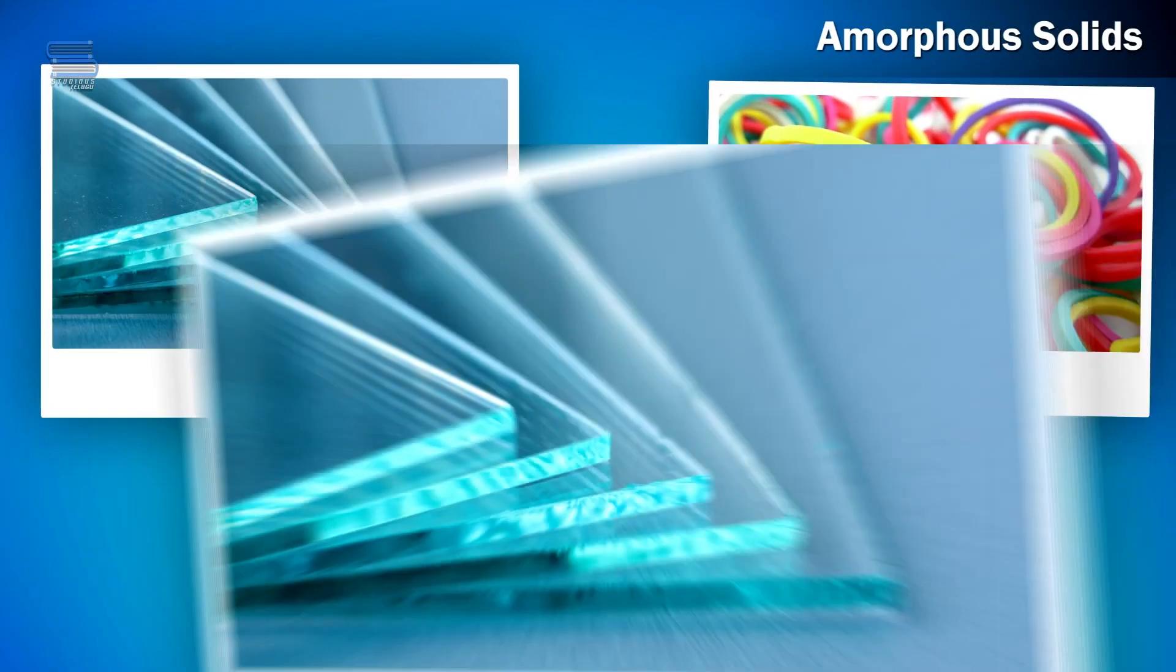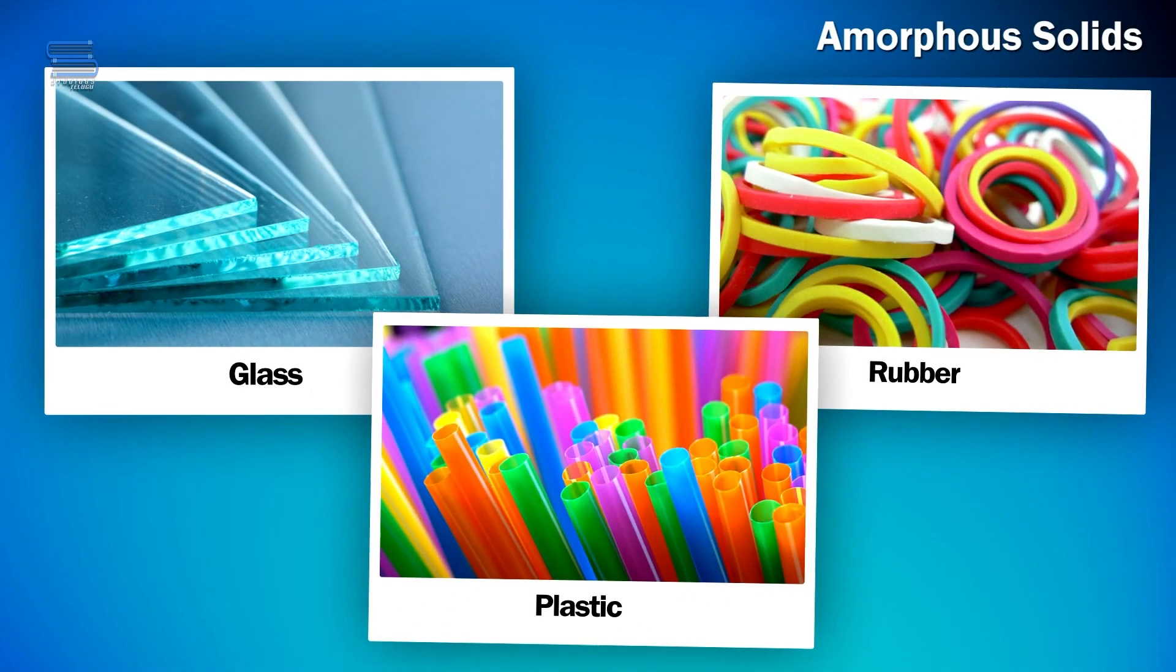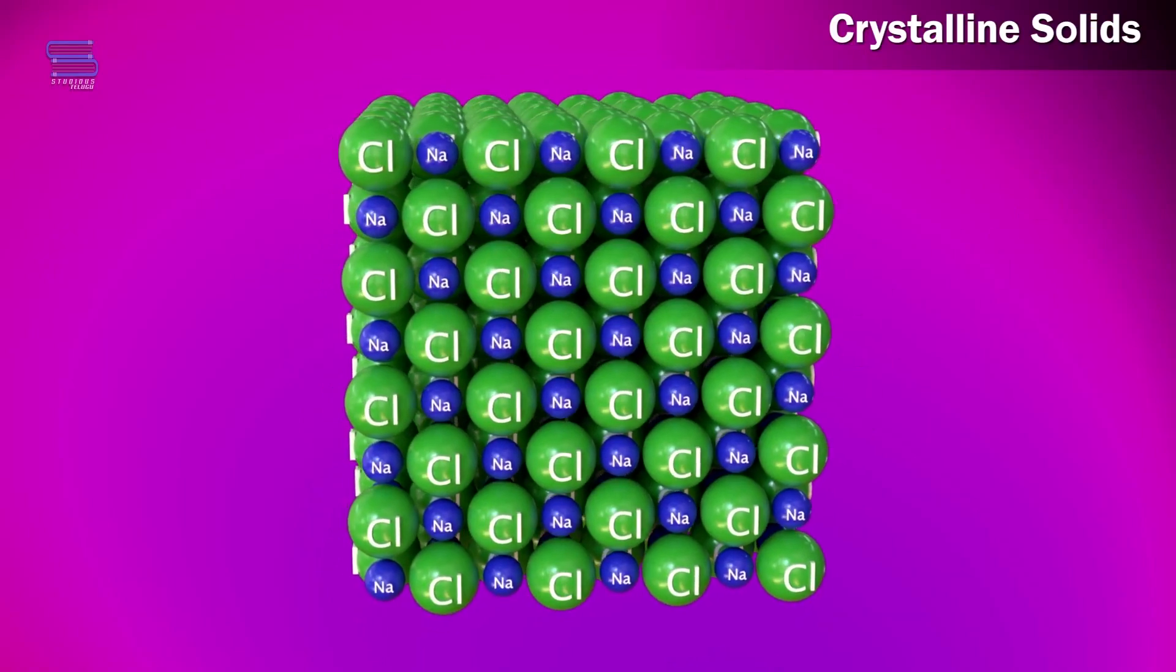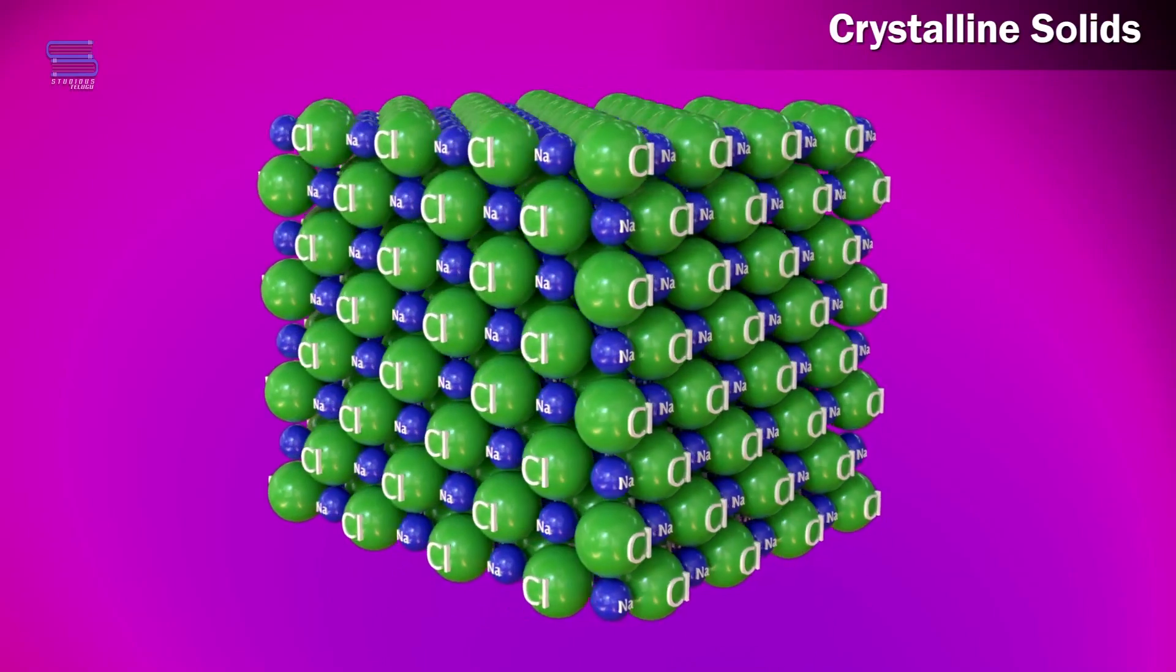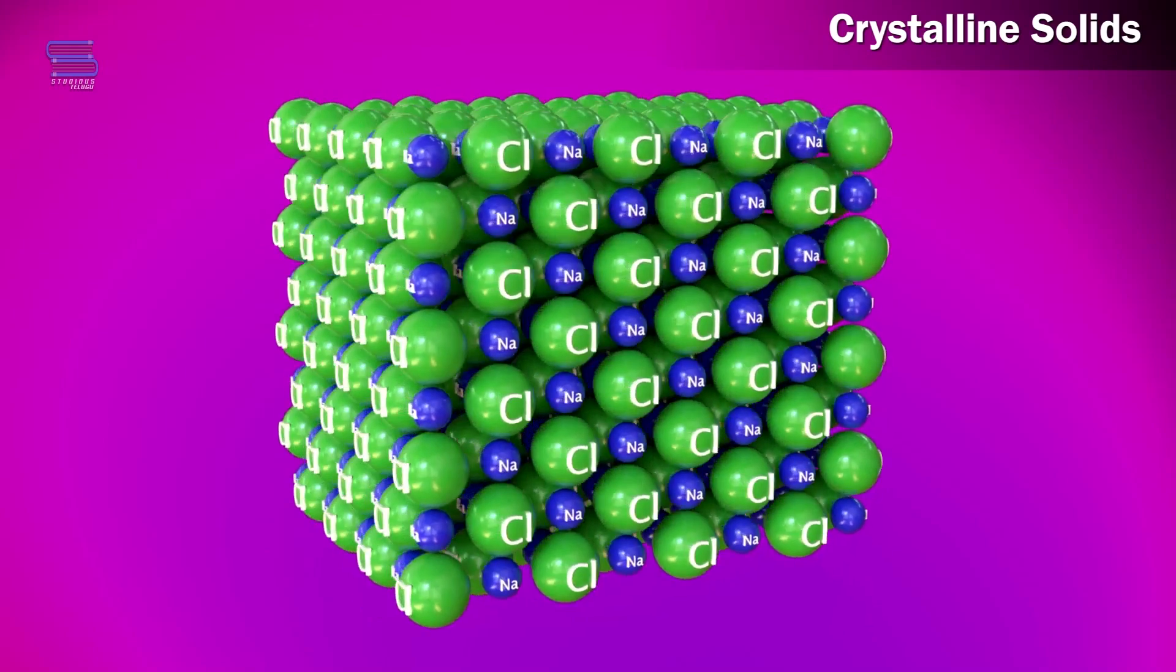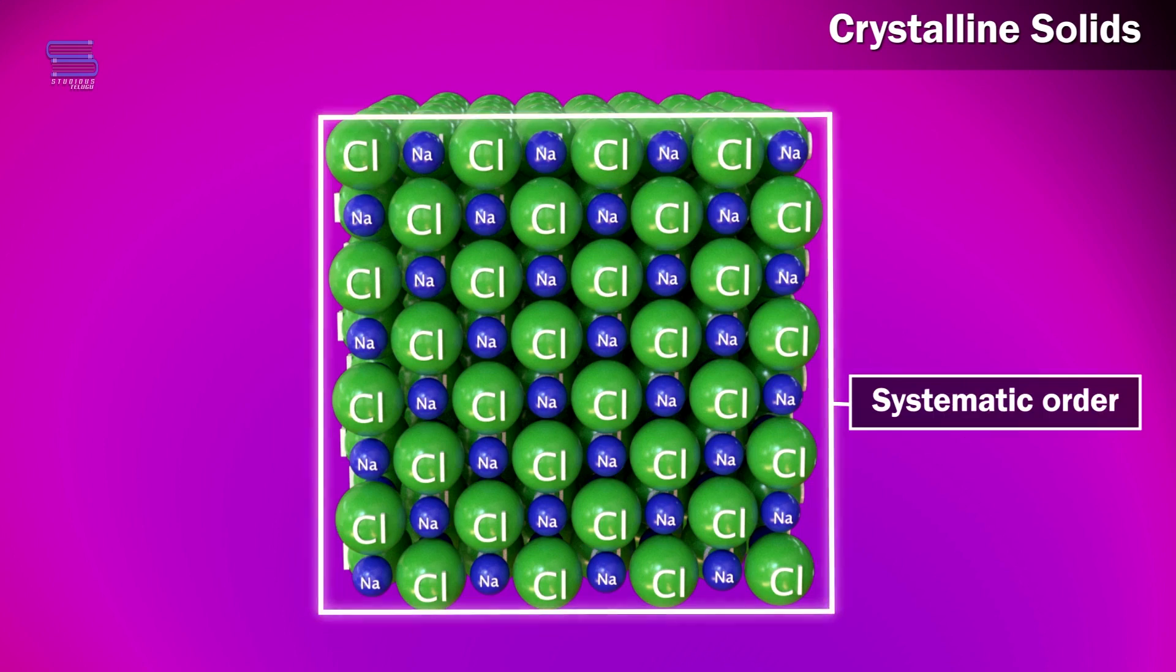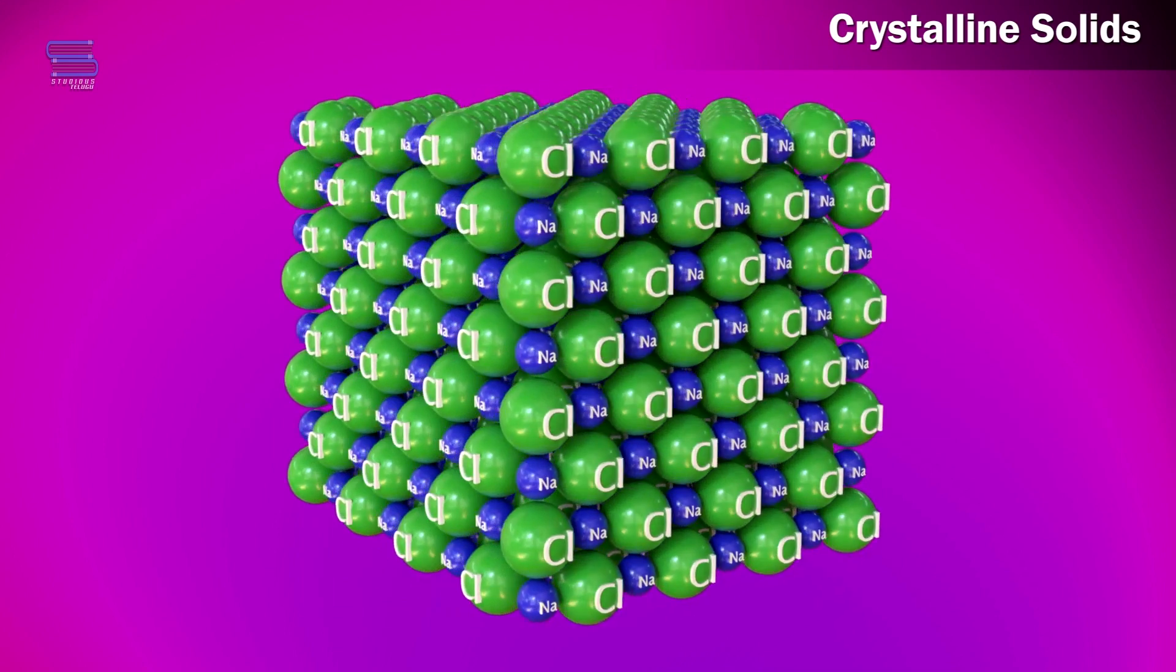Crystalline solids, on the other hand, possess a highly ordered and repeating arrangement of atoms or molecules. Their crystal lattice structure creates stunning geometric patterns that can be seen in minerals, metals, and even snowflakes. These solids have distinct melting points and exhibit unique physical properties.